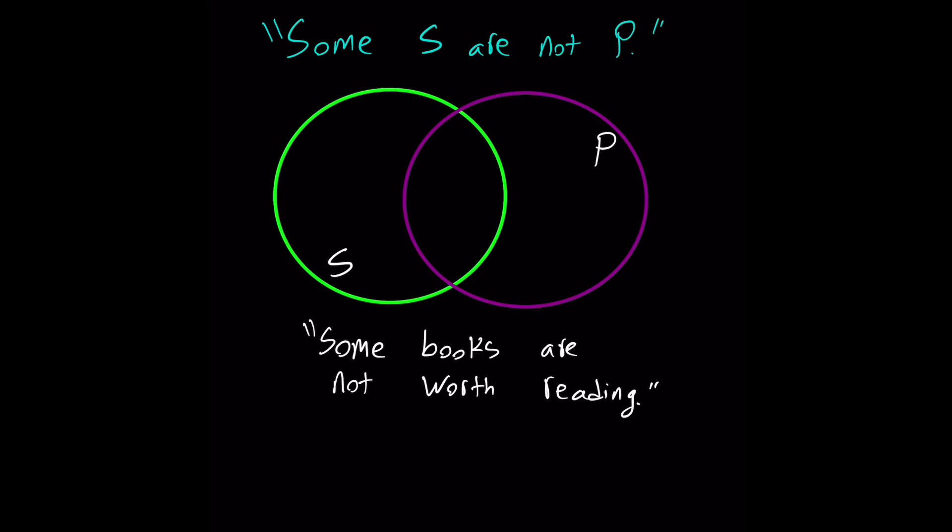Finally, we have the negative particular proposition, some S are not P. For example, some books are not worth reading. Books is the subject, the predicate is worth reading. At least one member of S does not belong to P. Notice the circles overlap. S appears outside the common area. There is at least one book that is not worth reading.